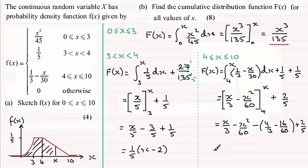And working this out, you end up with X over 3, and then you've got minus X squared over 60, and then minus 2 thirds. So that is our other value of F of X. So we've got all our three regions there.